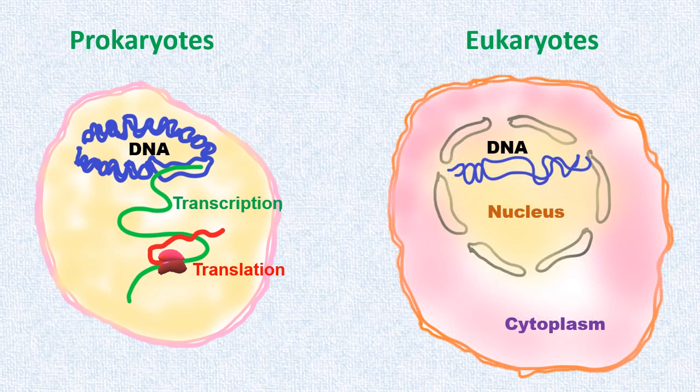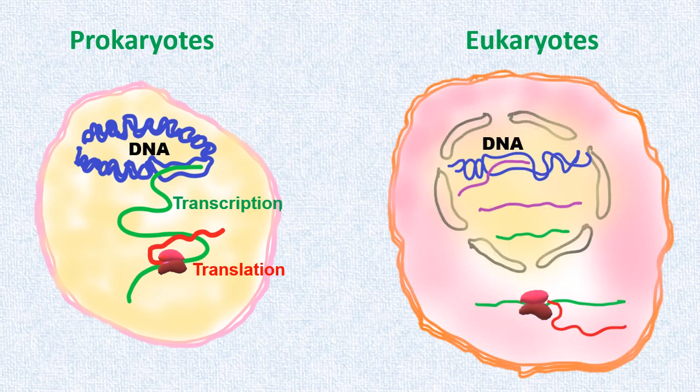Now look at the case of eukaryotes. The main feature of eukaryotic cellular structure is compartmentalization. In eukaryotes, transcription and translation occur in different compartments of the cell. Transcription occurs in the nucleus and translation occurs in the cytoplasm.